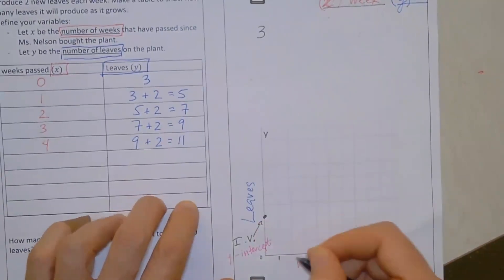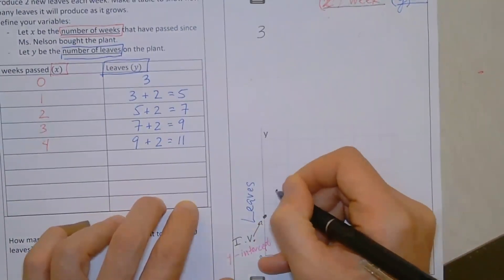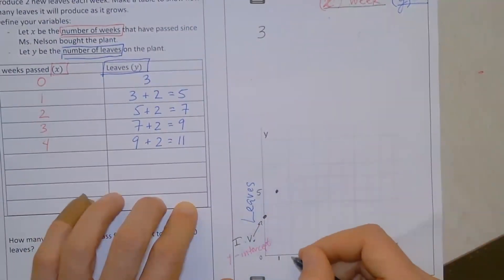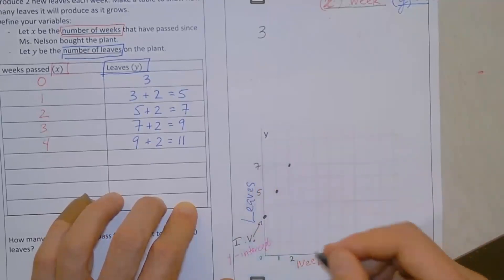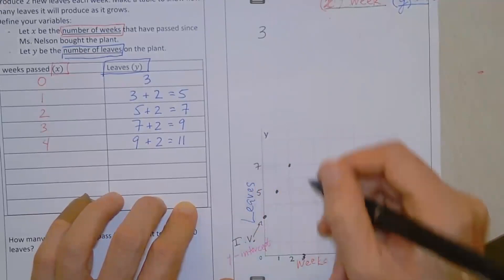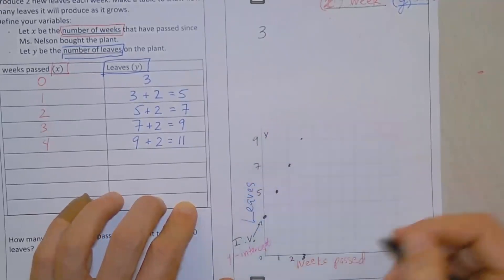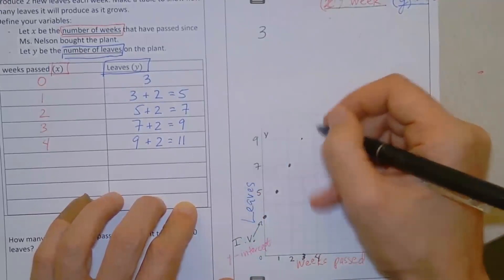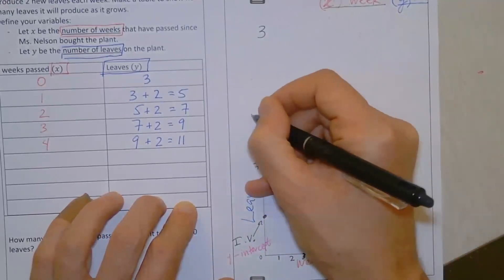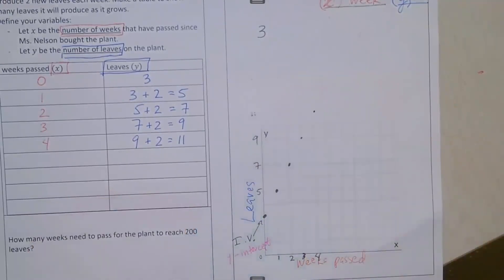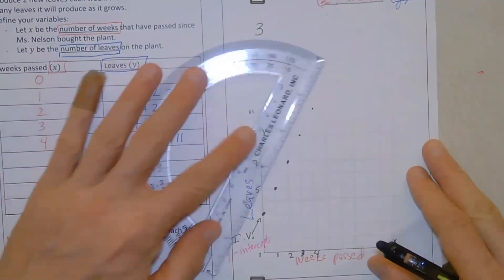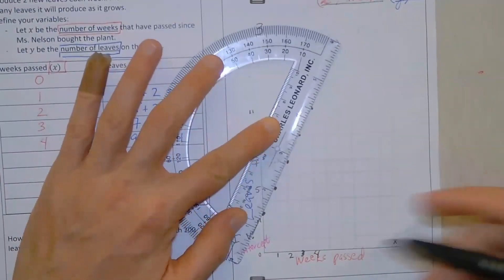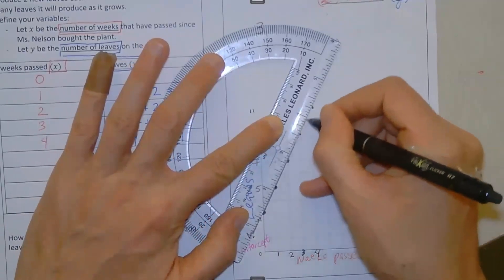So after one week, we have five leaves. After two weeks, we have seven leaves. After three weeks, we have nine leaves. After four weeks, we have eleven leaves. And that's enough, because at this point, we've already gone off the grid. So now we will draw a line that shows how the number of leaves will increase as weeks pass.